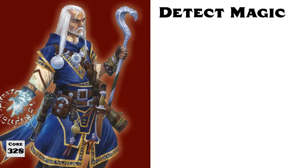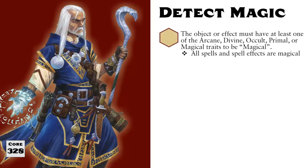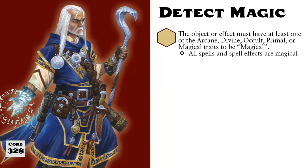Detect Magic and Read Aura are two cantrips that are often misunderstood. Before getting into the particulars of these spells, we need to understand what exactly it means to be magical in Pathfinder. Anything with the arcane, divine, occult, primal, or magical traits is considered to be magic. If it doesn't have one of those five traits, then it's not magical.